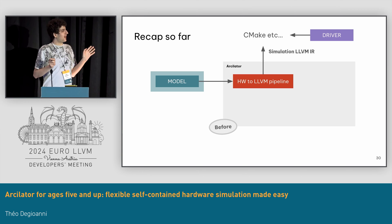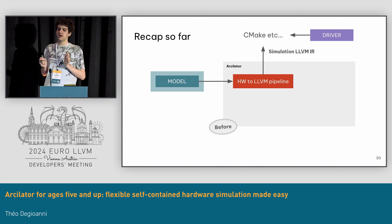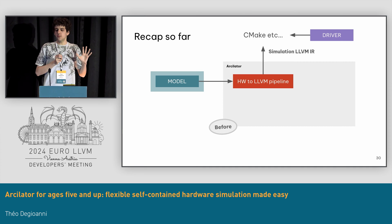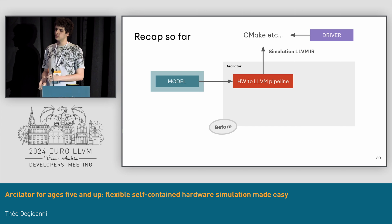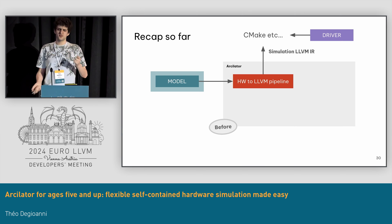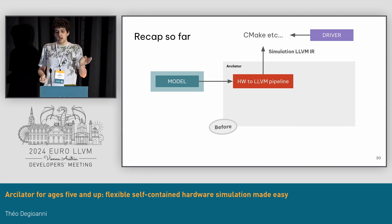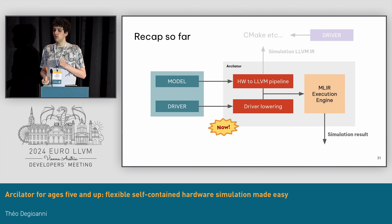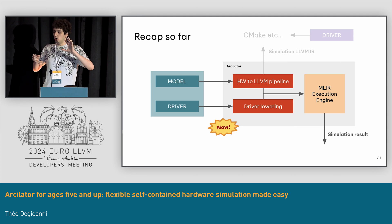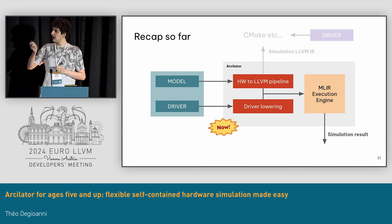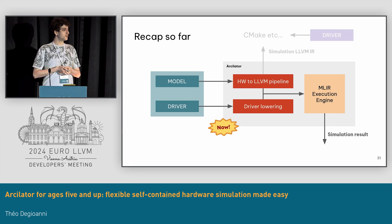To recap: this is the old flow in Arculator. Originally you would just give your model to Arculator, it would generate the LLVM IR, and you had to link it to your driver yourself and figure that out. Now with Arculator run, you can also give the driver alongside the module. It's going to load them, combine them together, and execute it using the MLIR execution engine — and you just get the result.